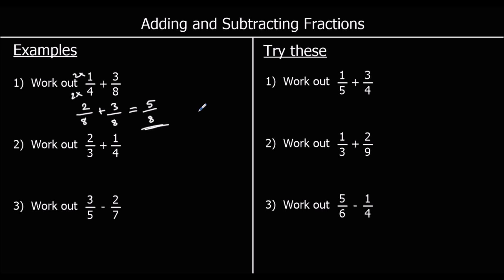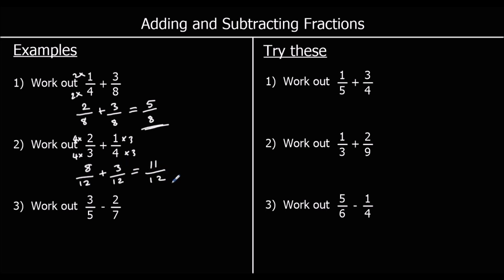We're looking for a number in the three times table and the four times table, and we can do this by doing three times four. Twelve is in both times tables because twelve is three times four. So we multiply top and bottom of two-thirds by four, and top and bottom of one-quarter by three, which gives us eight-twelfths plus three-twelfths. Eight of something plus three of something is eleven of something, so eight-twelfths plus three-twelfths is eleven-twelfths.